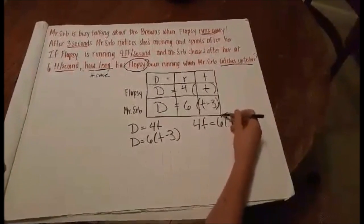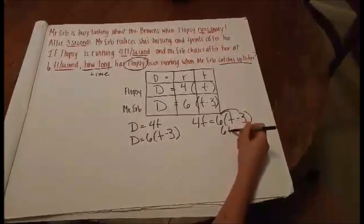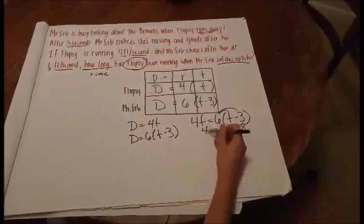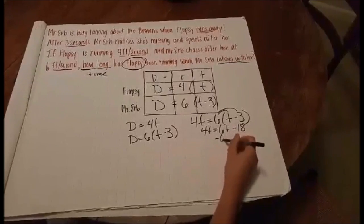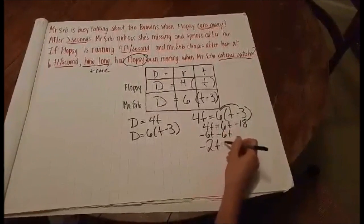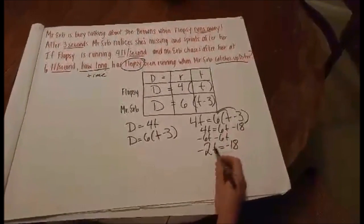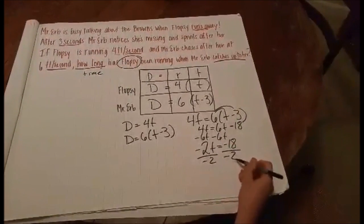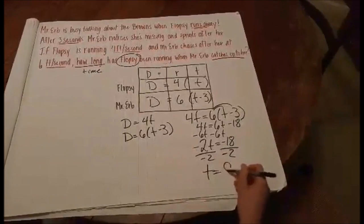I first start by distributing my six, which gives me six T minus 18 equals four T. Then I'm going to subtract six T so that way I can get it on the same side. And I lastly have to divide by negative two to isolate the variable, meaning T equals nine.